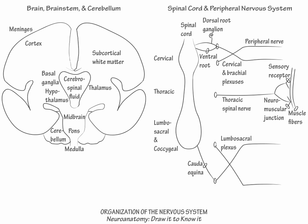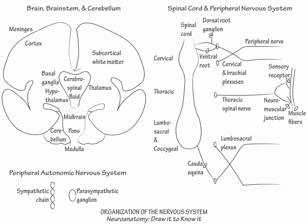Lastly, to represent the divisions of the autonomic nervous system, draw a parasympathetic ganglion and a sympathetic paravertebral chain segment. The parasympathetic nervous system is active in states of rest, whereas the sympathetic nervous system is active in states of heightened awareness and produces the fight-or-flight response. This concludes our diagram.